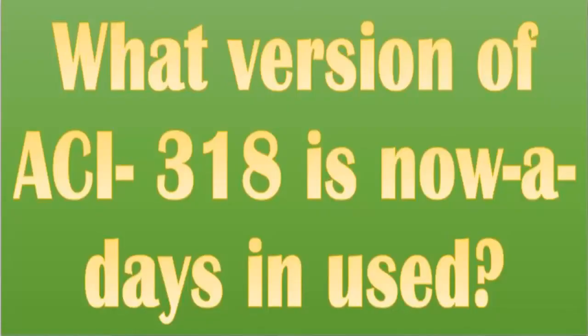ACI 318 is the best among building codes, so every civil engineer needs to know about it. ACI 318 is a combination of codes and details that gives us complete information about structural concrete designing and its detailing.